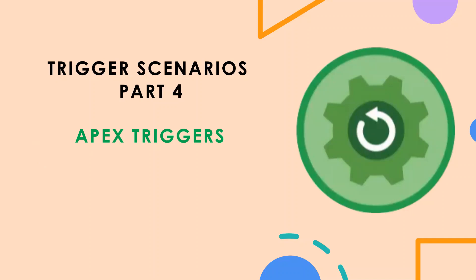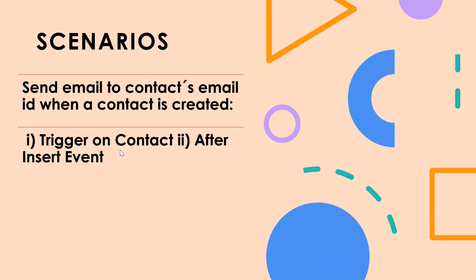Hi everyone. Welcome back to Apex trigger sessions. So today I have come up with one scenario which we'll discuss and then implement. The scenario is: whenever a contact is created, we'll send an email to the contact's email address provided while creating the contact. The trigger has to be on contact, and we're going to use the after insert event so that we'll have the email ID.